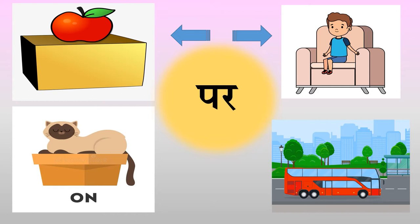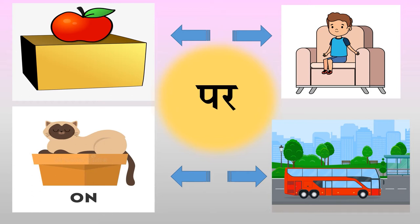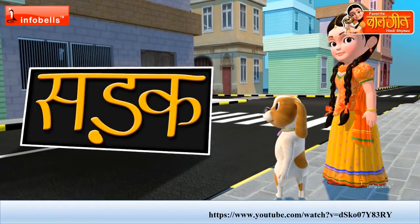दूसरे चित्र में एक लड़का है, वह किस पर बैठता है? हाँ, सोफे पर। तो बोलिए - लड़का सोफे पर बैठता है। फिर एक बिल्ली है, बिल्ली किस पर बैठती है? हाँ, बक्से पर। चौथे चित्र में बस है - बस सड़क पर है। आइए एक वीडियो द्वारा देखते हैं कि सड़क पर और क्या क्या है।